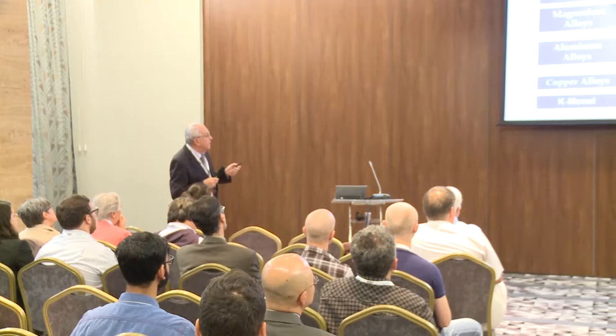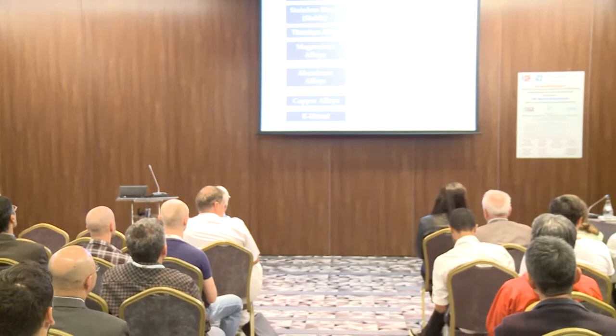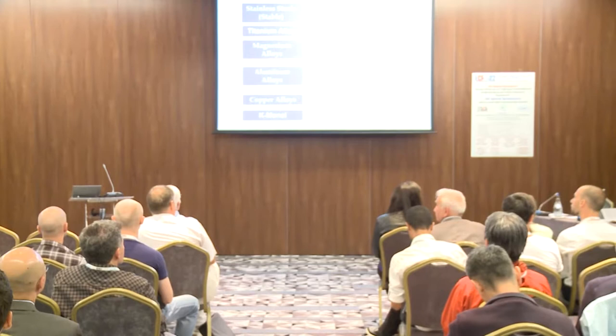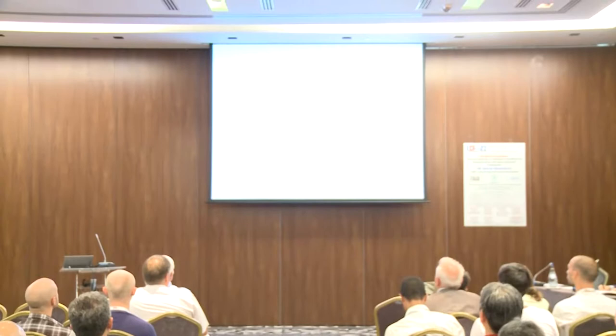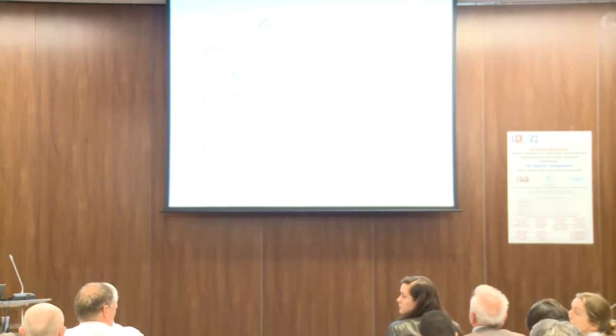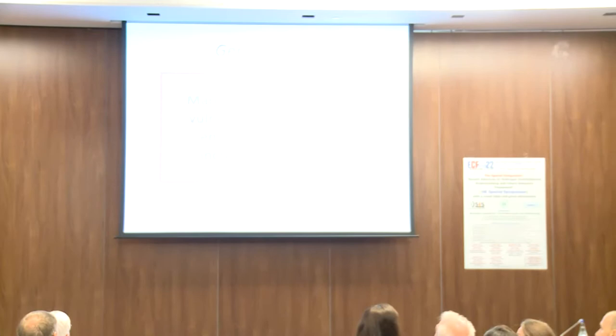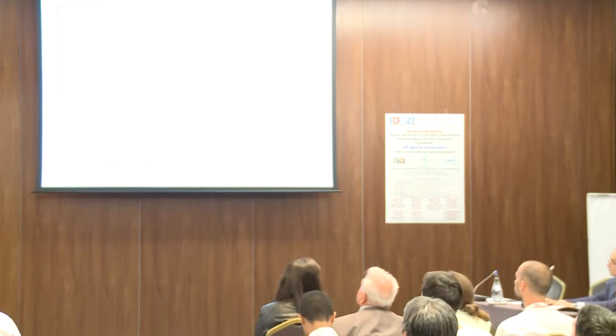High-strength steels — like maraging steels and others — are the most susceptible to hydrogen embrittlement, going up through copper and aluminum. We need the formation of atomic hydrogen for this degradation to take place. As a general rule, after looking at many systems, materials become more vulnerable to hydrogen embrittlement with increasing strength. Maraging steel is the worst; aluminum is much better.